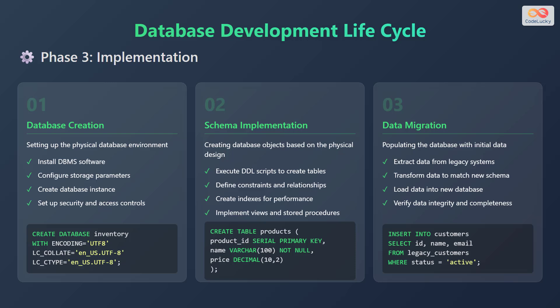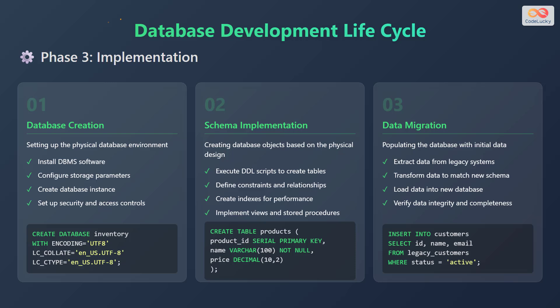The third phase is the implementation phase. In the implementation phase, we bring the database design to life by creating the database and populating it with data. This phase involves three main steps. Database creation involves setting up the physical database environment. This includes installing database management system software, configuring storage parameters, creating a database instance, and setting up security and access controls. An example of code is shown.